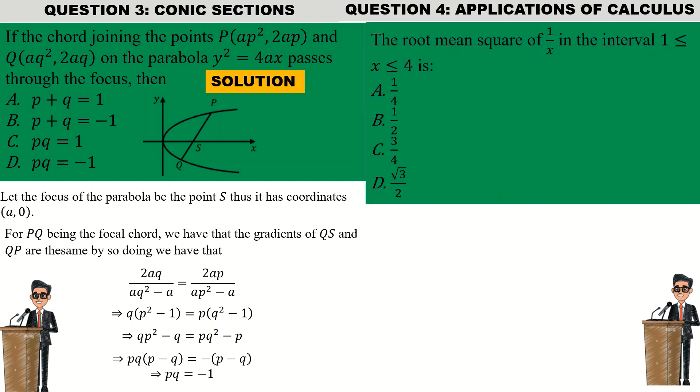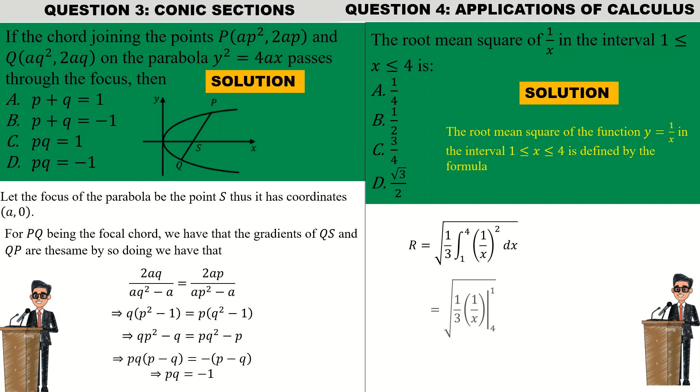Fourth question was applications of calculus. It reads: the root mean square of 1 on x in the interval 1 to 4 is. For the solution, the root mean square of function 1 on x in the interval 1 to 4 is defined by the formula: r equal to the integral of 1 divided by 4 minus 1, which is 1 divided by 3, the integral from 1 to 4 of my function squared, which is 1 on x squared, integrated with respect to x.